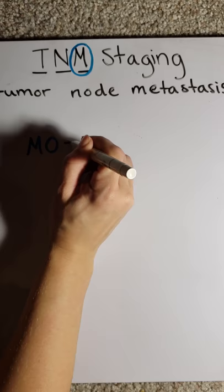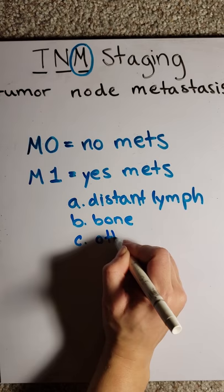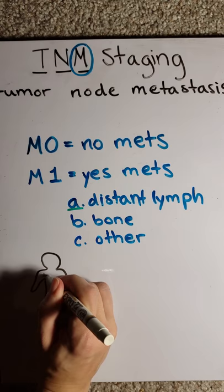M0 indicates the cancer has not metastasized. M1 means the cancer has metastasized. M1a indicates distant lymph node metastasis. M1b indicates bone metastasis. If any other kind of metastasis is involved, instead of or in addition to these aforementioned, this is M1c.